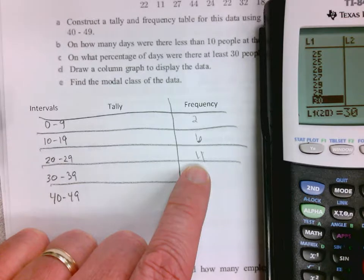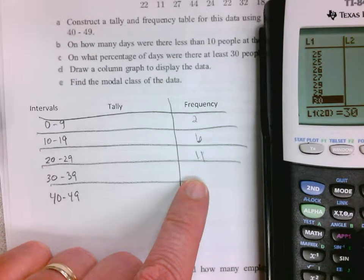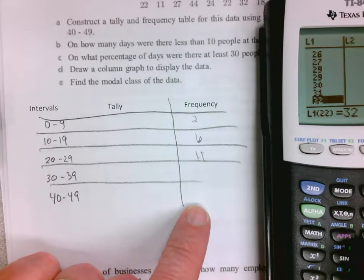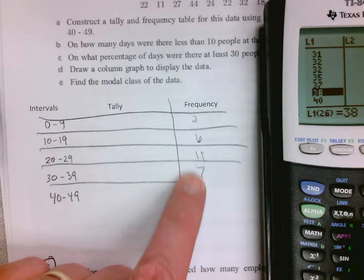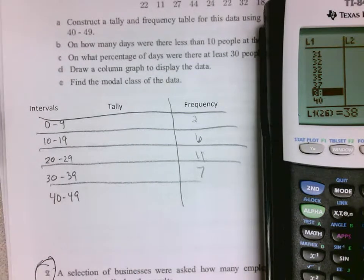And the 30s is 1, 2, 3, 4, 5, 6, 7, 8—so 7. And it's good to check. I know I need to end up with 30 at the total at the end.